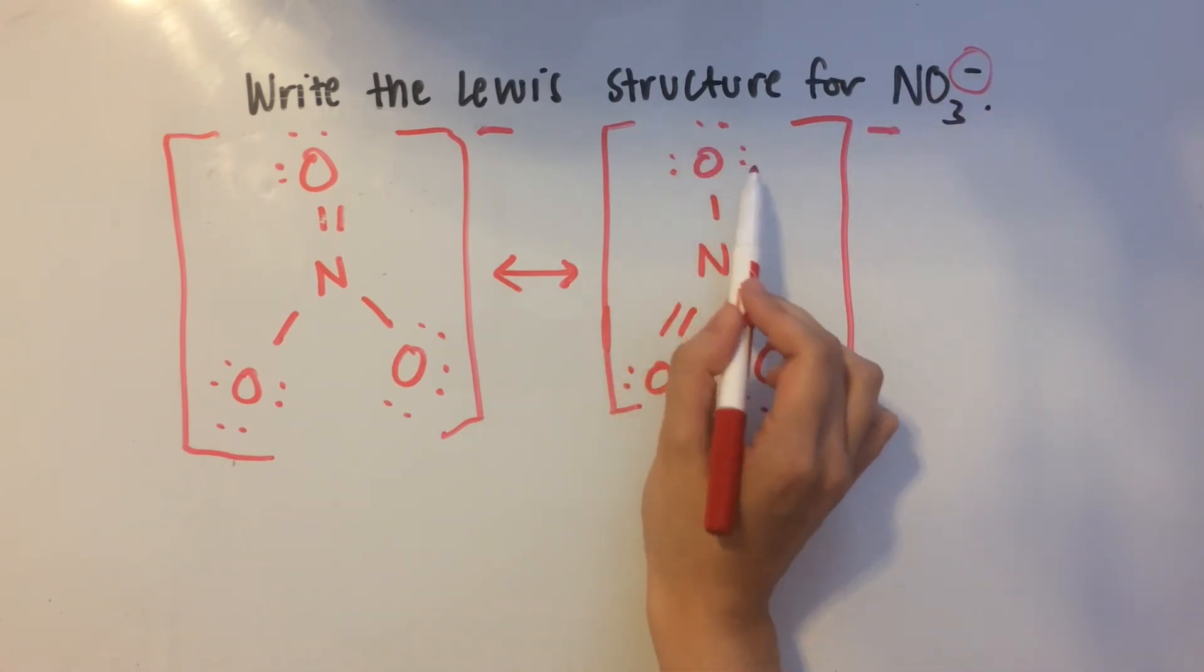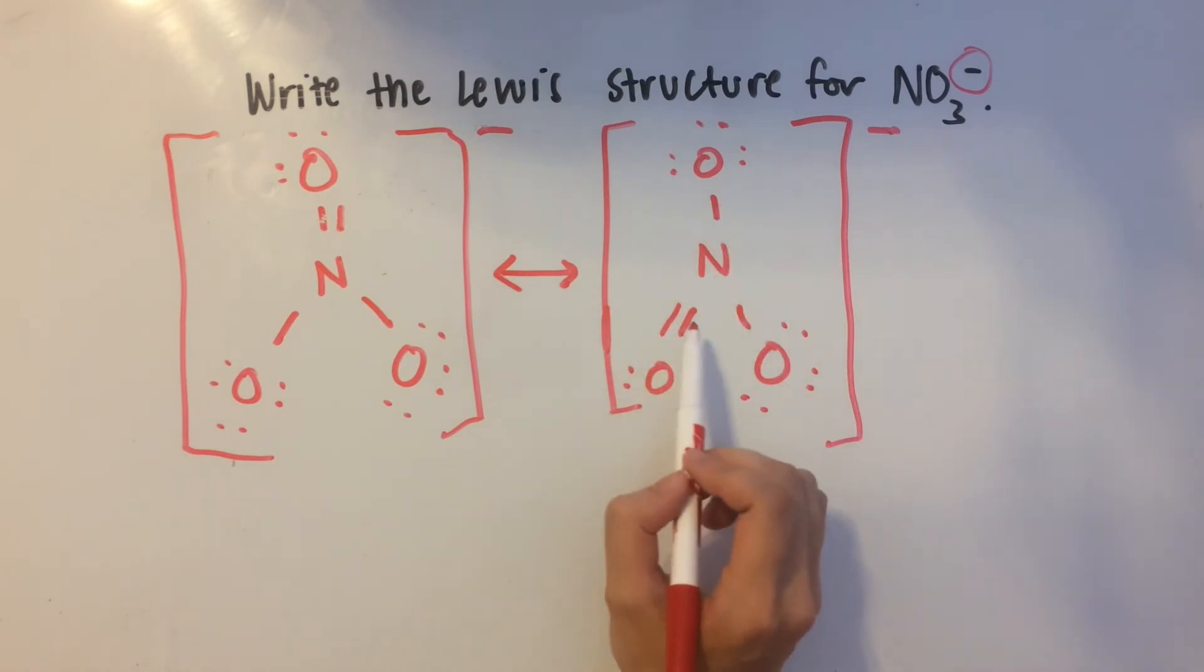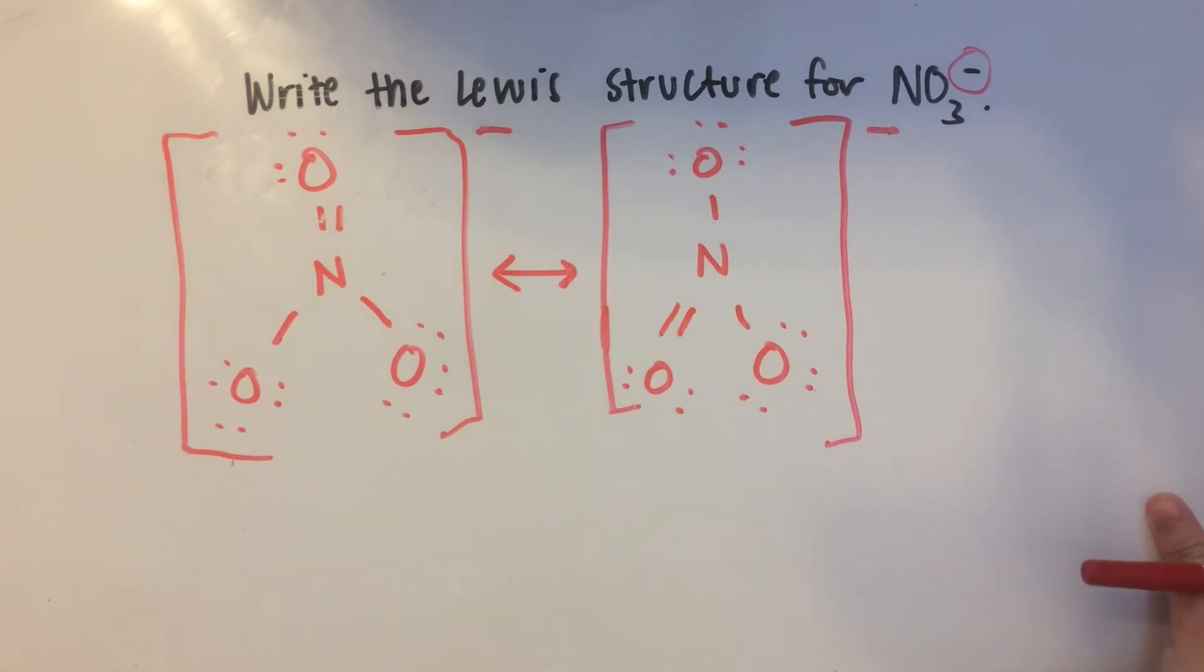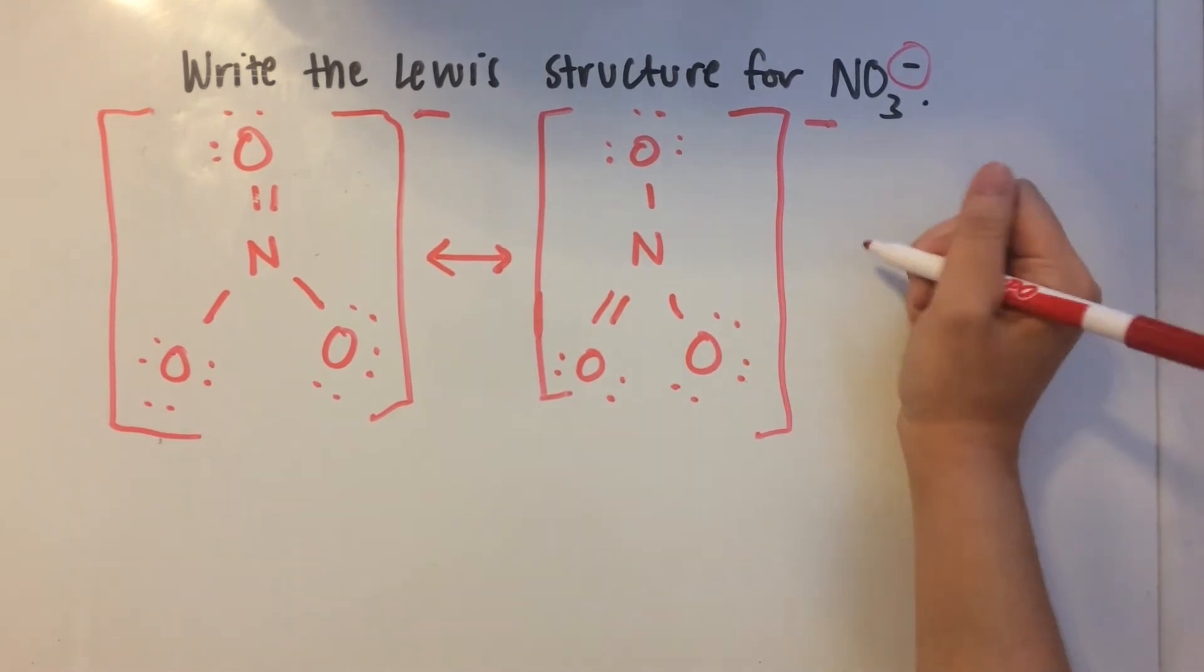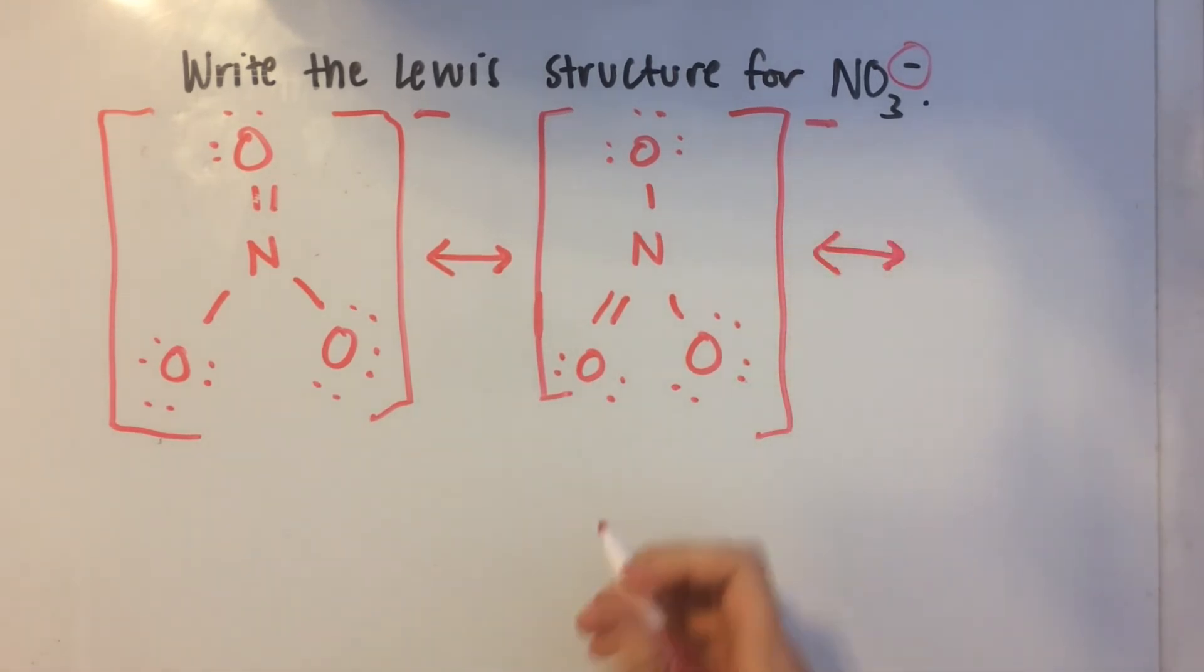One, two, three, four, five, six, seven, eight, nine, ten, eleven, twelve, thirteen, fourteen, fifteen, sixteen, seventeen, eighteen, nineteen, twenty, twenty-one, twenty-two, twenty-three, and twenty-four. But there's one more resonance structure for NO3, which is why I'm going to draw another arrow. And let's put this down here.